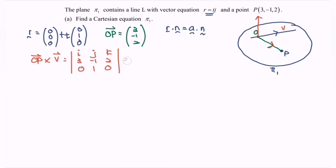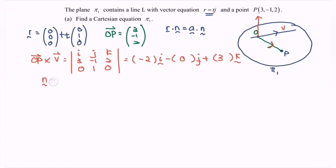Now determine the normal. We expand the determinant using i, minus j, plus k. Crossing j and k to find the i component gives -2. The j component gives 0. Crossing i and j gives 3 minus 0. So the normal n equals (-2i, 0j, +3k), which is the normal direction vector (-2, 0, 3).